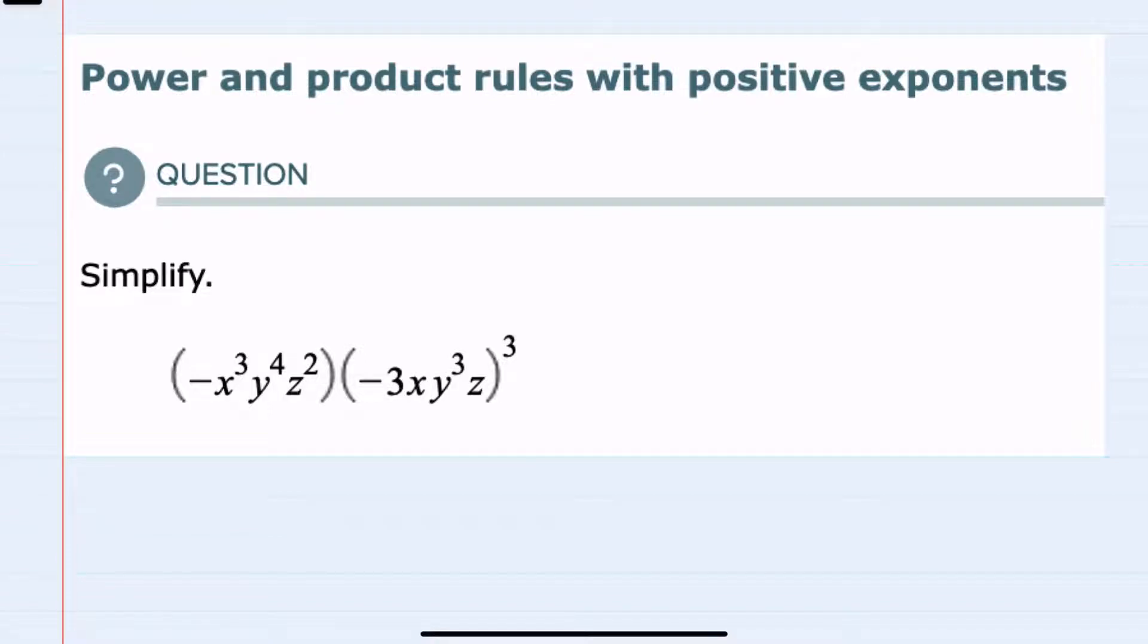In this video, I'll be helping you with the ALEKS problem type called Power and Product Rules with Positive Exponents. We're asked to simplify this expression, and I can see that we have multiplication indicated by the two parentheses being next to each other, but I also have this exterior exponent.